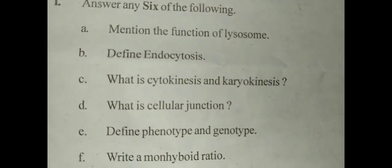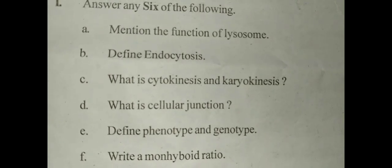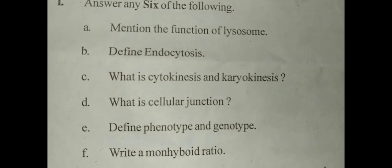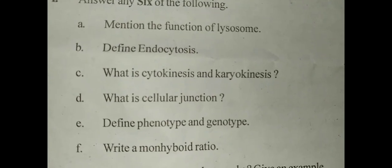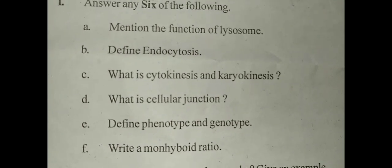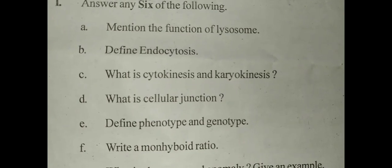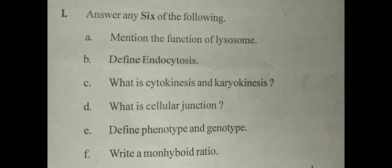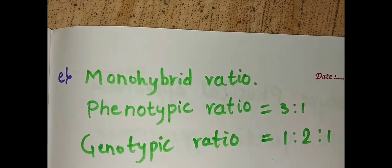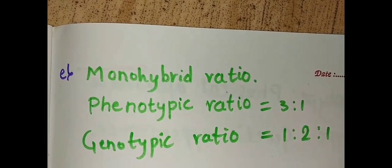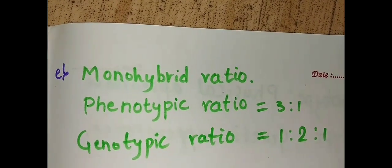The next question is write a monohybrid ratio. Actually it is monohybrid ratio but it was misprinted. The answer for this question is phenotypic ratio is 3 is to 1 and the genotypic ratio is 1 is to 2 is to 1.